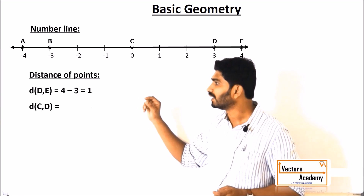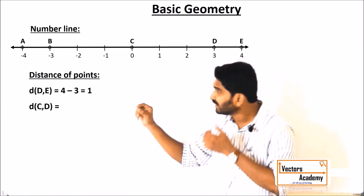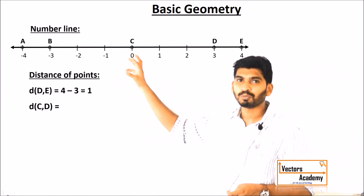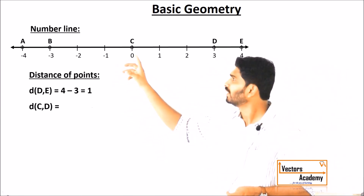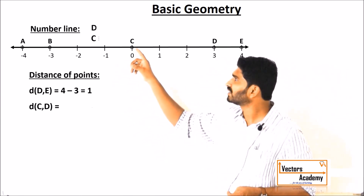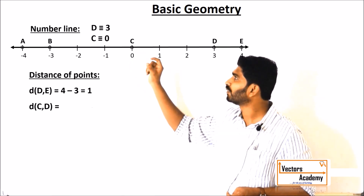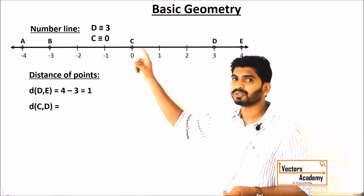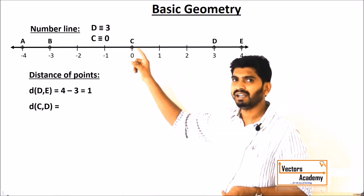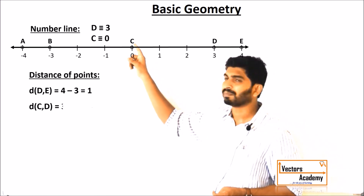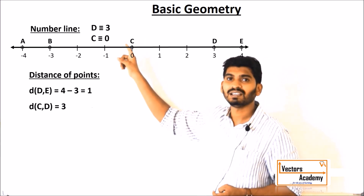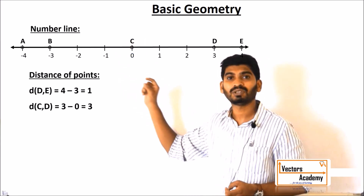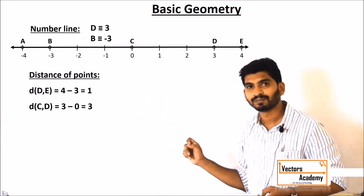Similarly, if we have to find the distance between C and D — two points C and D — the coordinate of C is 0 and the coordinate of D is 3. So which is the larger one? 3. So you have to subtract 3 minus 0, that will give you 3 units.